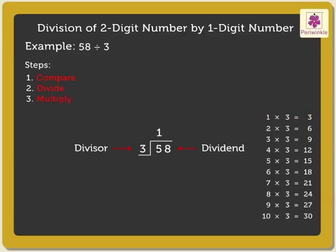Step 3 is to multiply. As we know, 1 into 3 is equal to 3. We write the number 3 in the tens column under 5. Step 4 is to subtract 3 from 5, which is equal to 2.